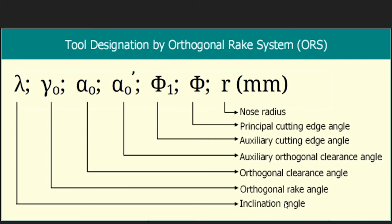Let's see the designation of each angle. Lambda is used to represent the inclination angle. Gamma-O is used to represent the orthogonal rake angle. Alpha-O is used to represent the orthogonal clearance angle. Alpha-O1 is used to represent the auxiliary orthogonal clearance angle. Phi is used to represent the principal cutting edge angle and phi-1 is used to represent the auxiliary cutting edge angle. The nose radius is represented in mm in the ORS system, whereas in the ASC system it is represented in inches.